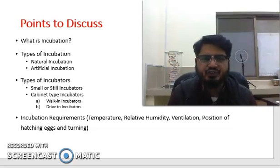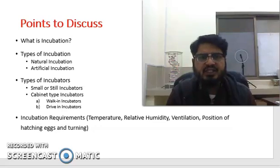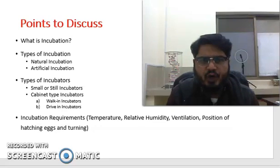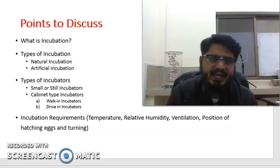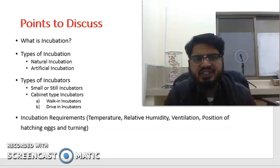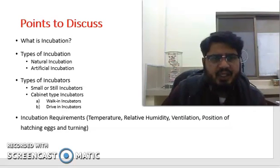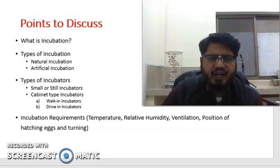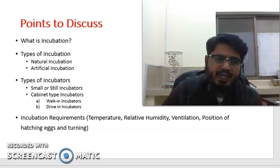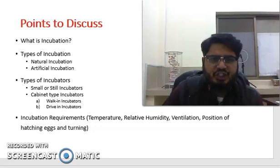For example, in case of small incubators, in first week, the temperature is maintained at 102.5 to 103 degree Fahrenheit. And then, in the second and third week, temperature is set to 102 degree Fahrenheit. After 18th day to end of the hatch, the temperature is lowered down to 100 to 101 degree Fahrenheit. In mammoth type of incubator or cabinet incubators, the setter temperature is set at 99.5 degree Fahrenheit for the first 18 days. While in case of hatcher, the temperature is reduced to about 0.5 degree Fahrenheit, that is 99 degree Fahrenheit for the last 3 days.